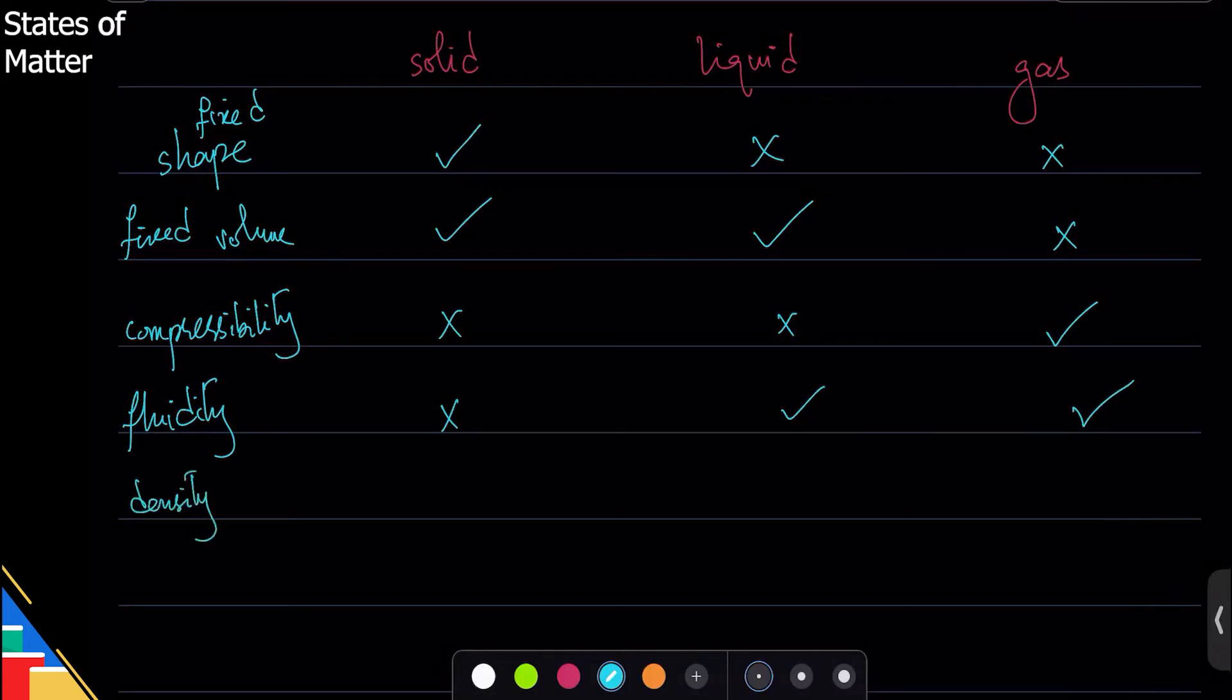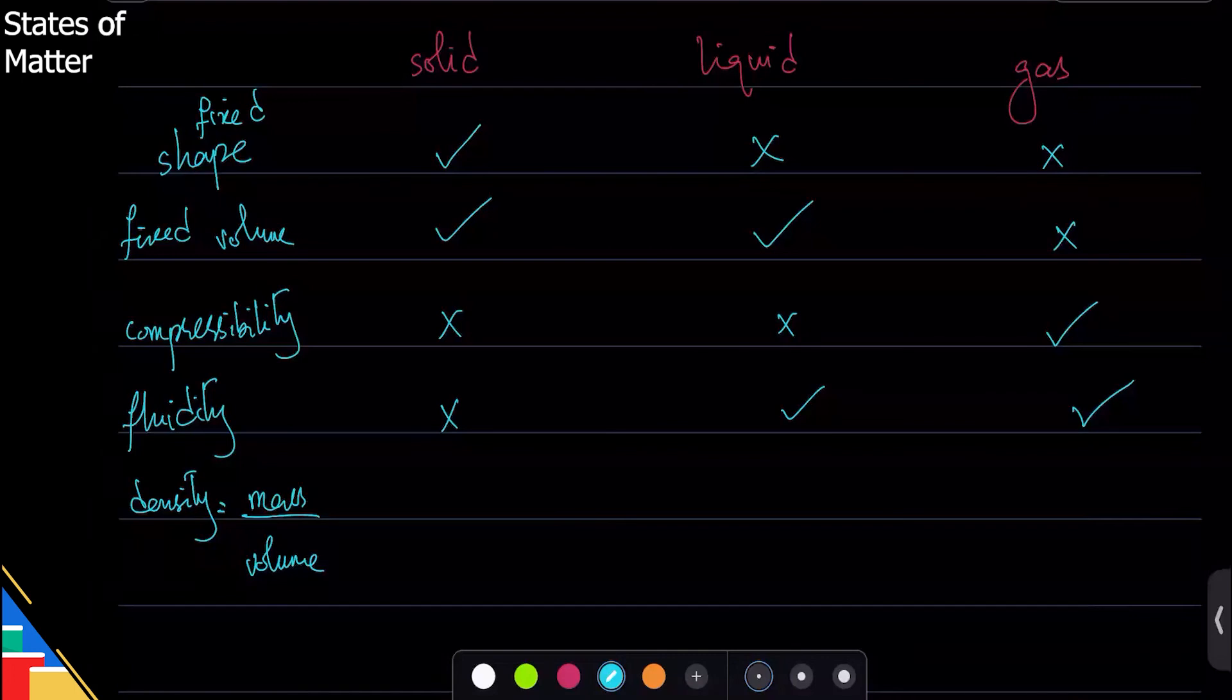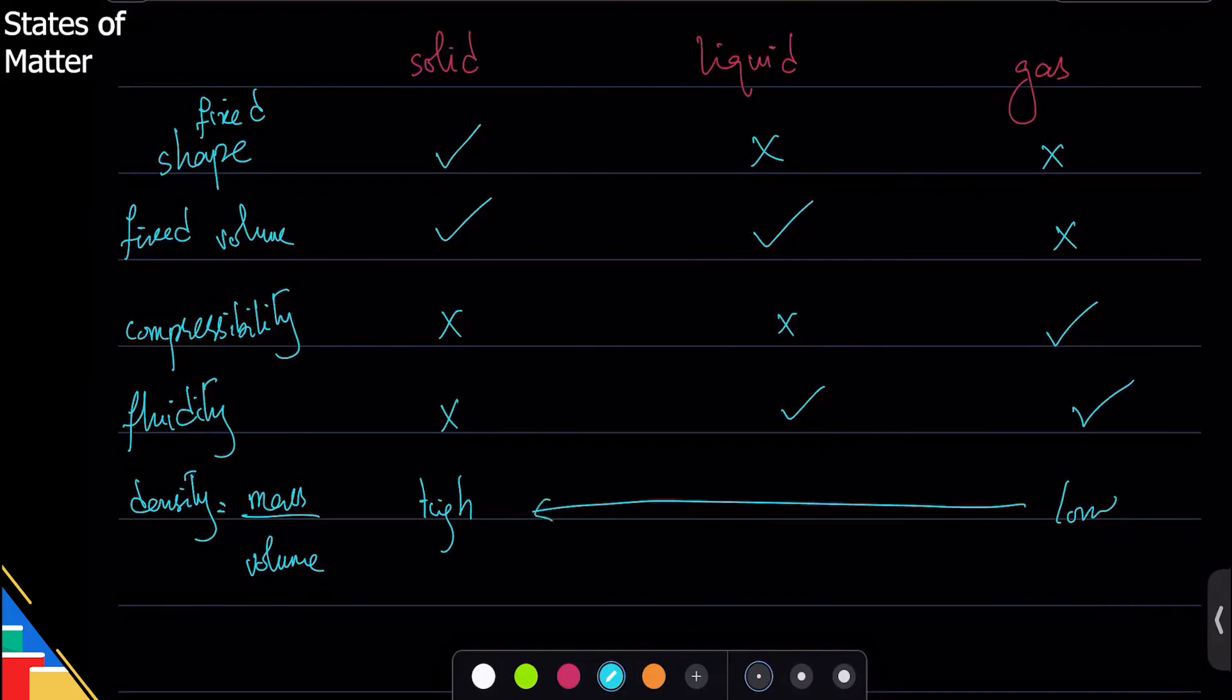And lastly density, which is basically how much mass you have in how much volume, how cramped or how heavy does that thing feel. So solids have high density, gases have low density, the liquid is in the middle. So this goes from high to low in that order.